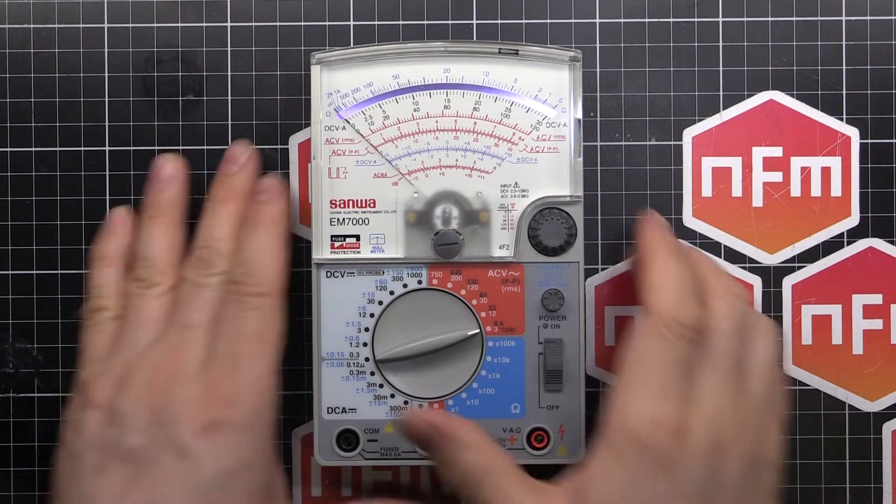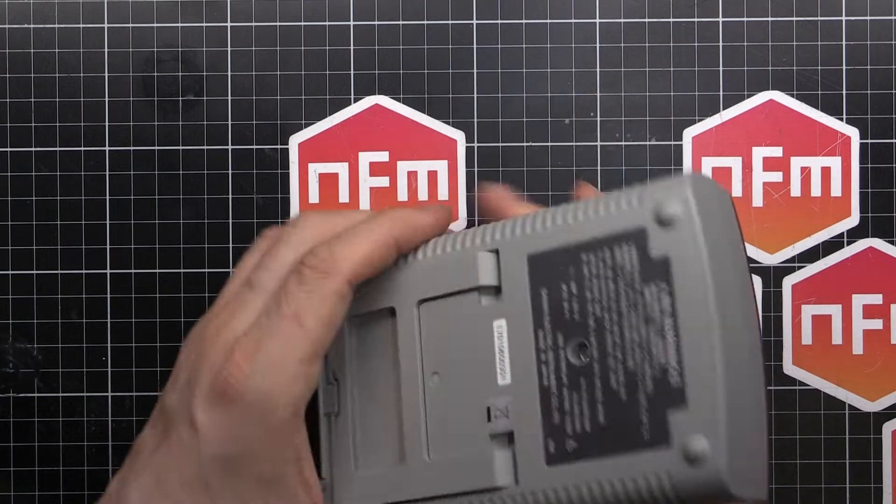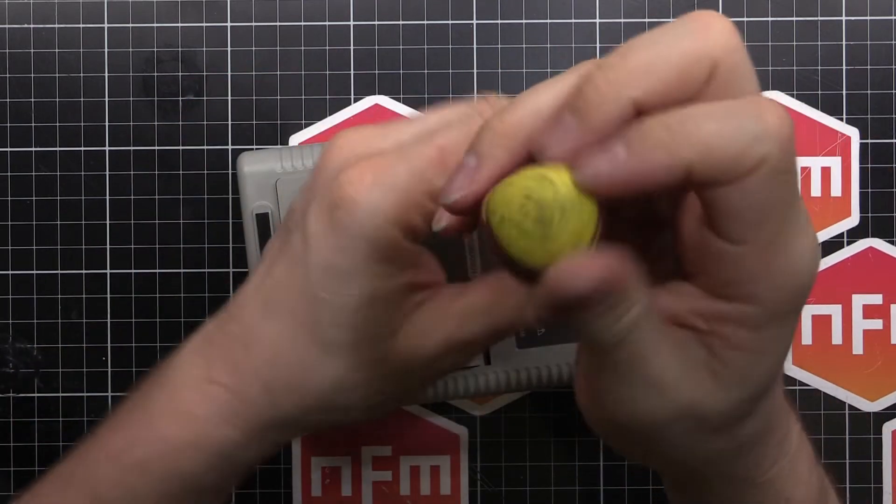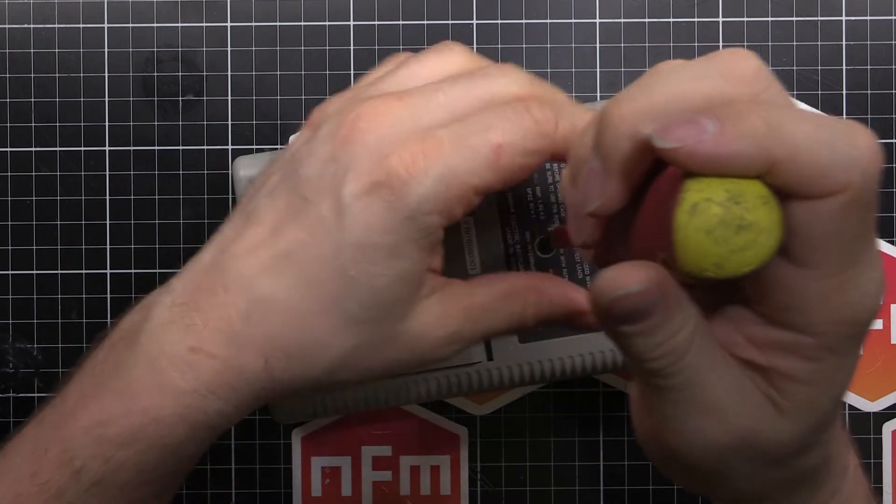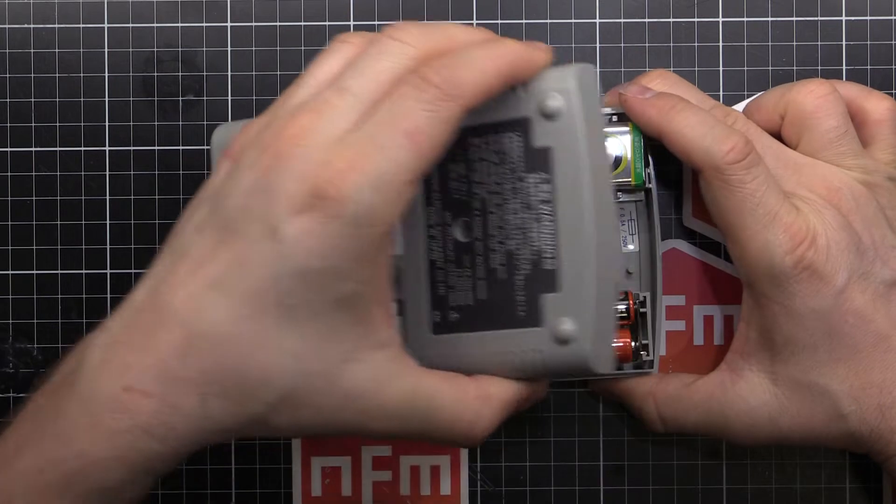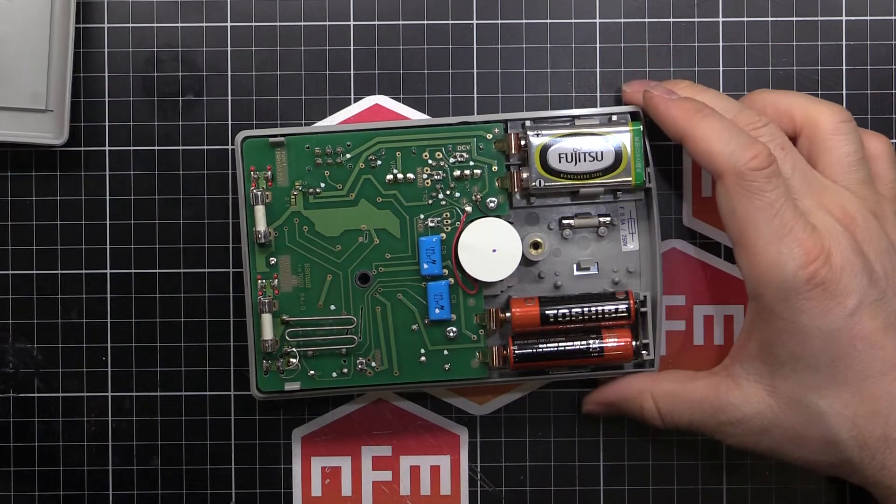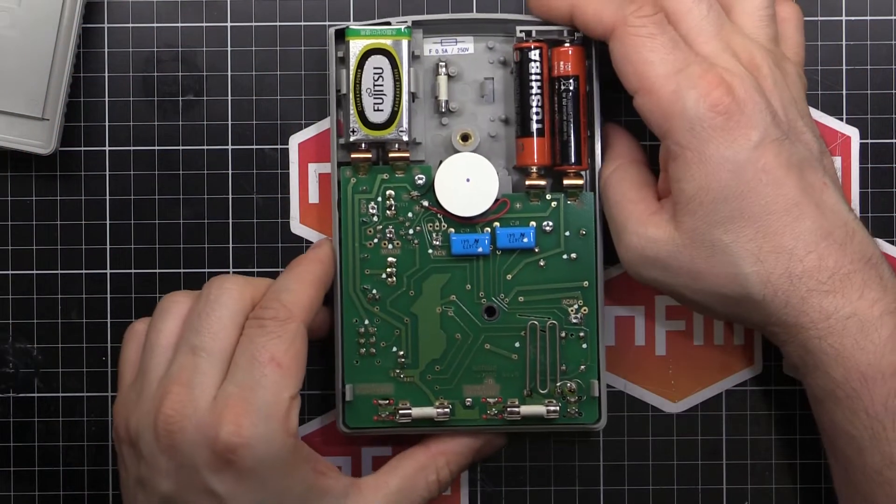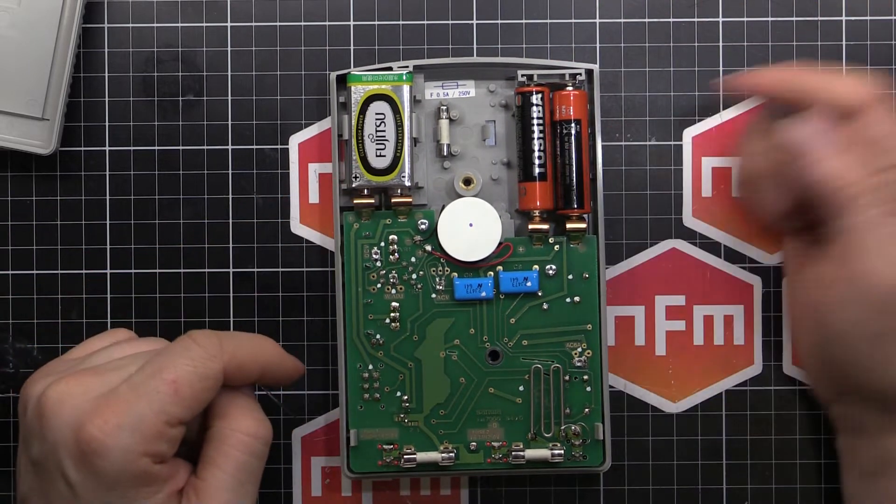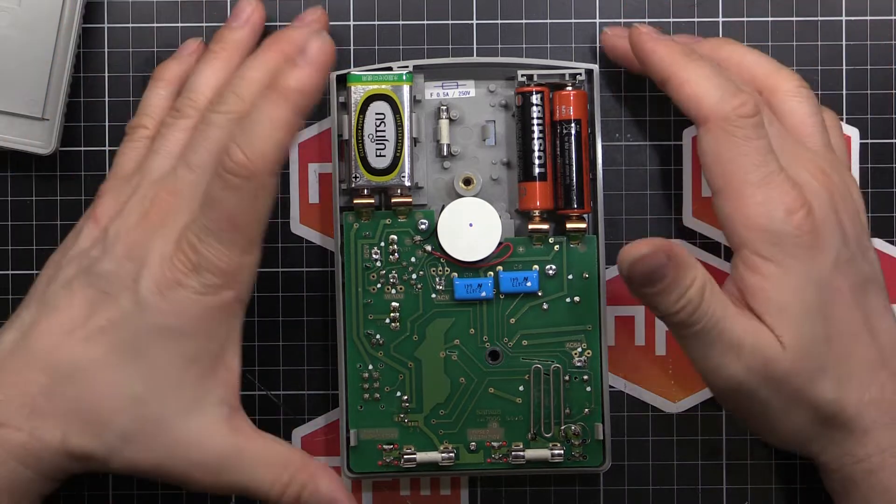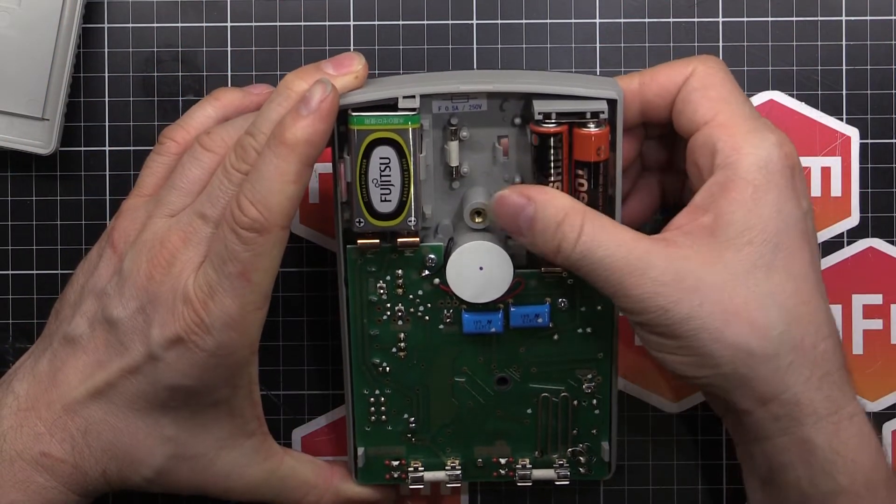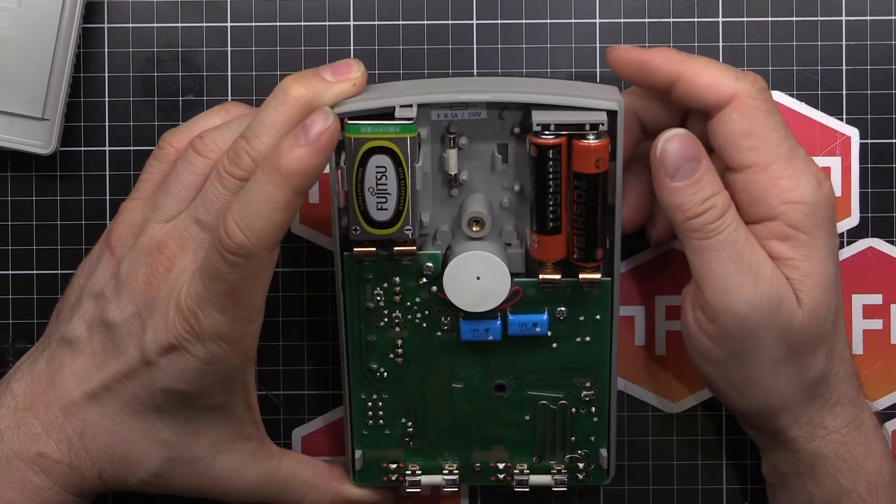So enough messing around with the meter. Let's pull the thing apart. See what makes this tick. There's one screw in the back. And it should come apart. There we go. So we can access the batteries and the fuses. So it came with batteries. Interesting choice. Fujitsu and Toshiba. Would have expected them to be the same or something. But maybe they just choose whatever they can buy cheapest. They were free, they came with the thing.